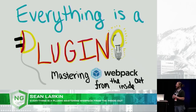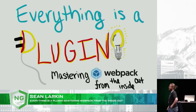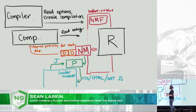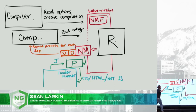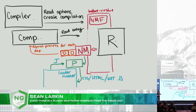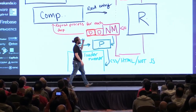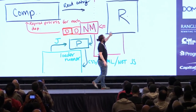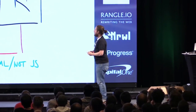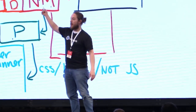The talk is 'Everything is a Plugin: Mastering Webpack from the Inside Out.' You just learned the entire process of webpack — the compiler reads options and creates a compilation. That compilation reads the entry property and sends it through the normal module factory into the resolver, because we need to know if the file exists. When it does, it creates a module object with the source inside.